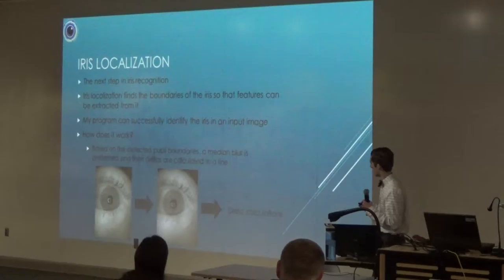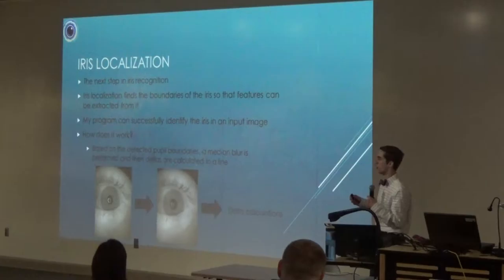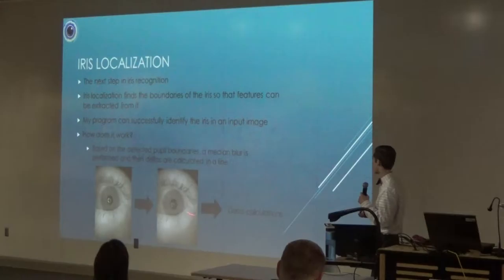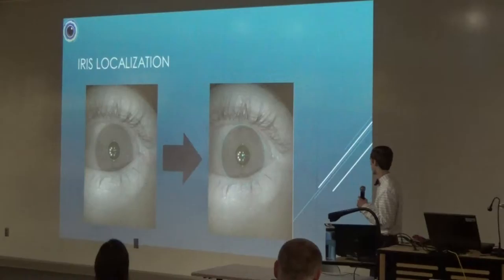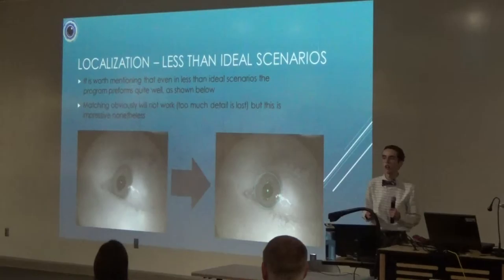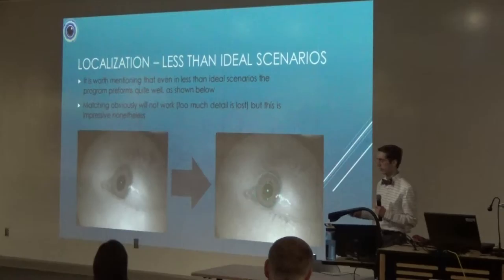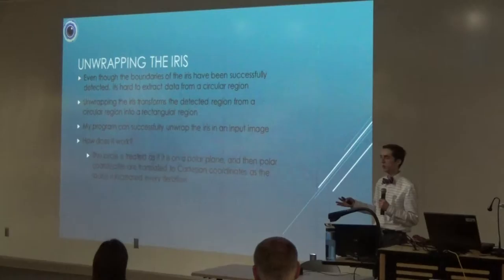The next step is iris localization. Once I know where the pupil is, I need to find the iris to extract features from it. How does this work? We take the input image and blur it, so that the boundary between the edge of the iris and the white part of the eye - the sclera - has the highest delta change in pixel intensity at that point. Then starting from the pupil I scan outward until I find that highest change in pixel intensity, and that's where the iris boundary is. Here is the result: there's the pupil, and there it is finding the iris almost perfectly. I also show a less-than-ideal blurry picture where my code still detected the iris reasonably well, though template matching wouldn't work on it due to lost detail.